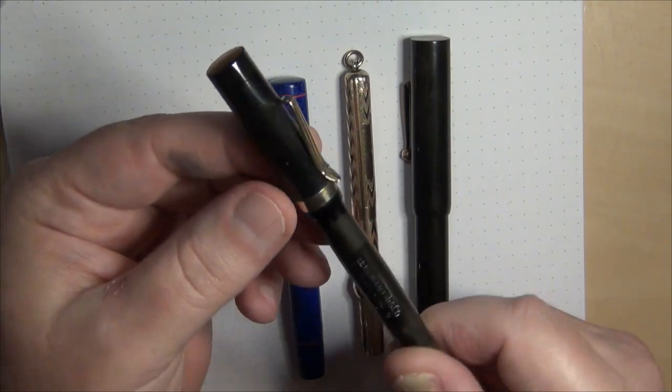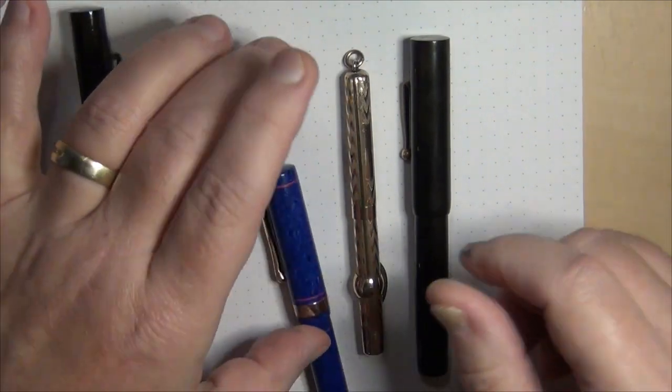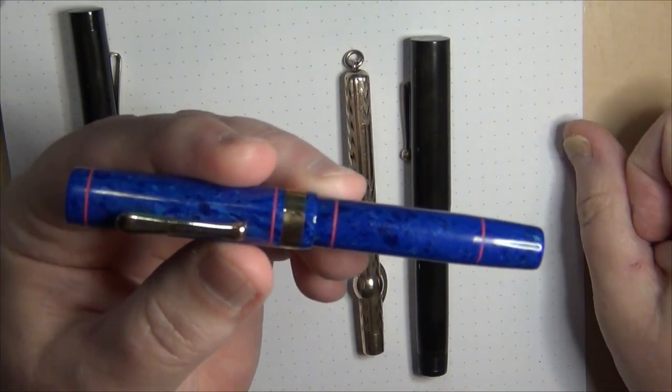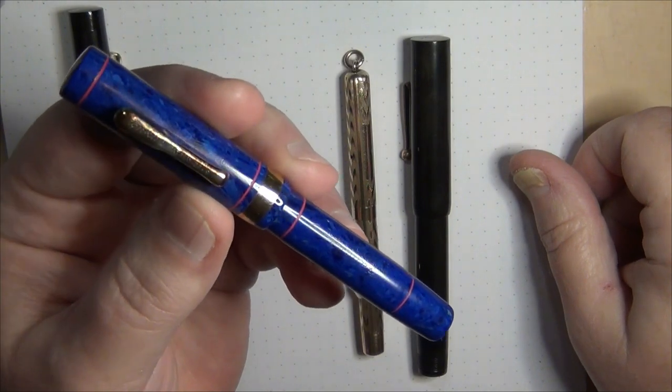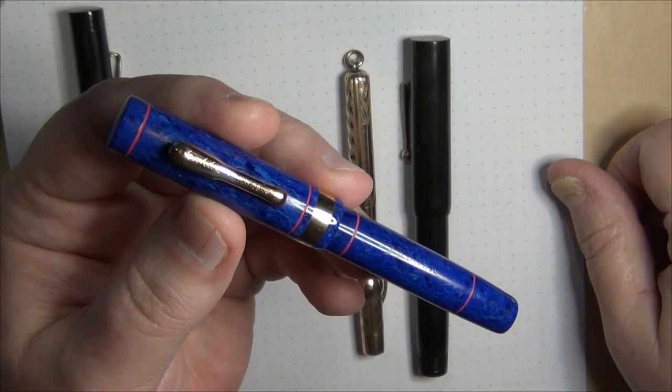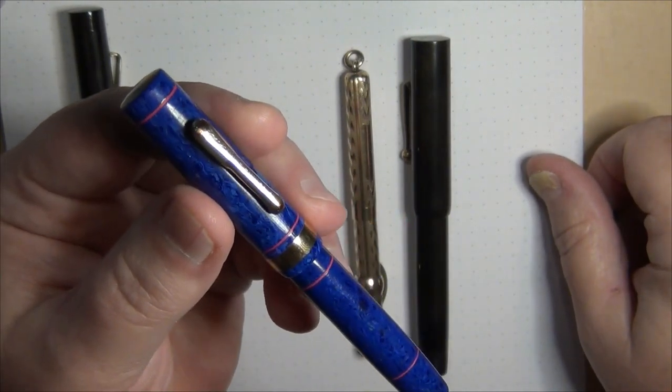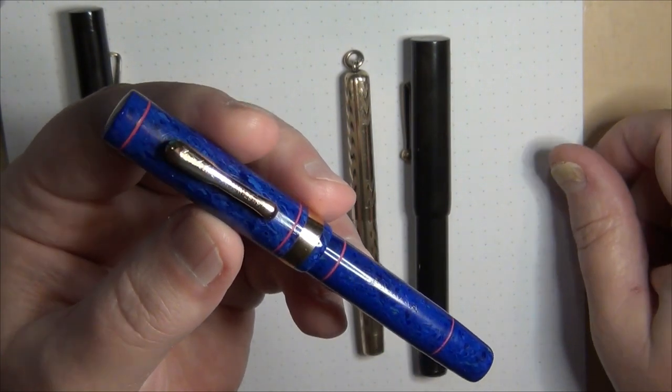This one here, Conklin Endura. I already have some Conklin Enduras in my collection much larger than this one. I've got one that's more of an orange and I've got another one, I'm trying to remember what the other color is off the top of my head.